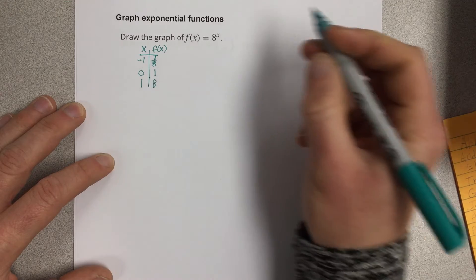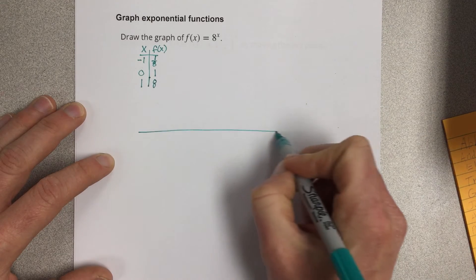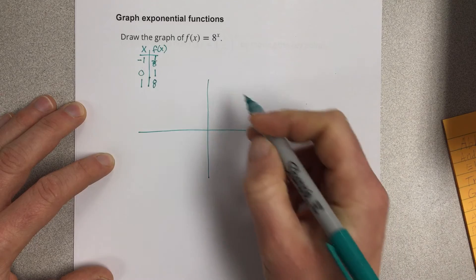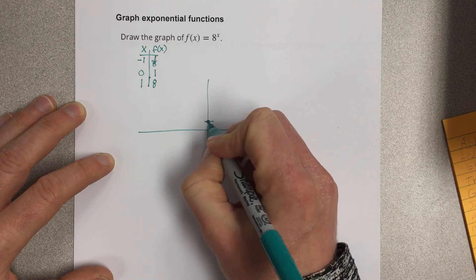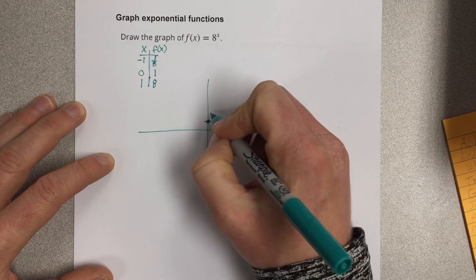So now I have three points and I should be able to graph this. Let's make a coordinate plane and mark (0, 1) and (1, 8).